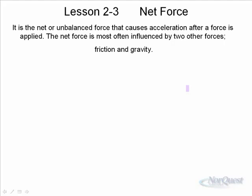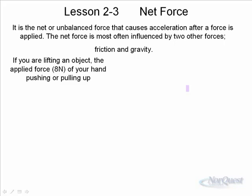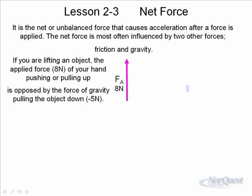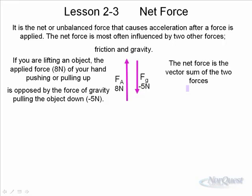Generally, if you're lifting an object, the applied force — let's say 8 Newtons — of your hand might be pushing up. And if the weight of the object is 5 Newtons, then the force acting down is going to be 5. So you have an upward force of 8, a downward force of 5. When you add these two forces together, you get a net force of 3 Newtons. Because the upward force is greater than the downward force, the net force is up.